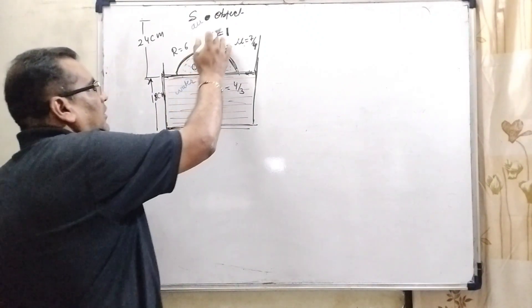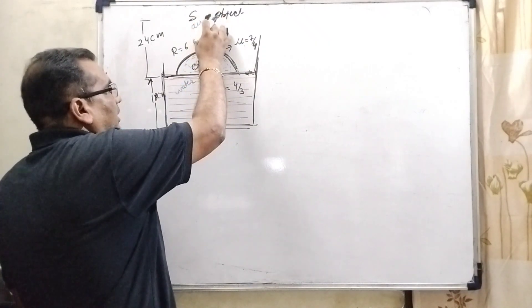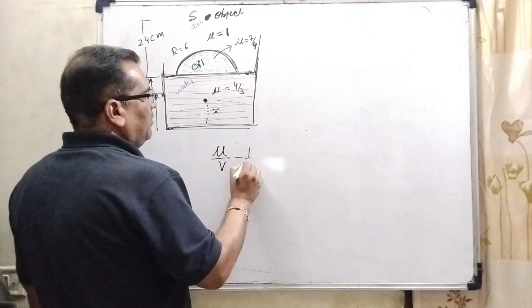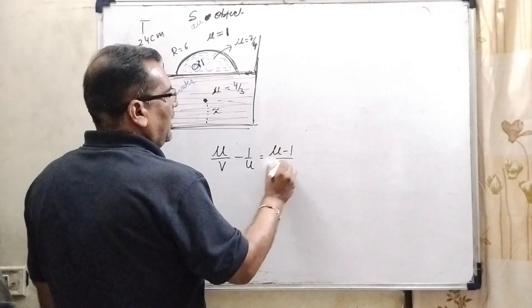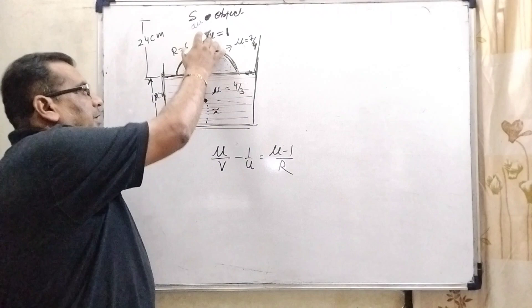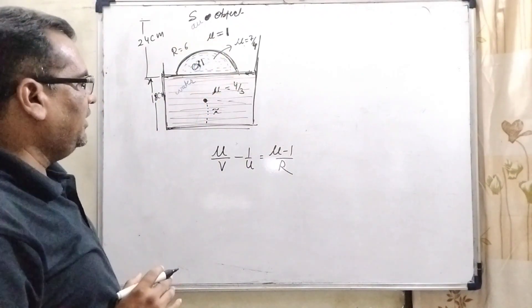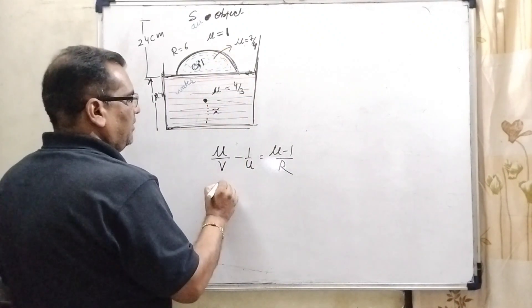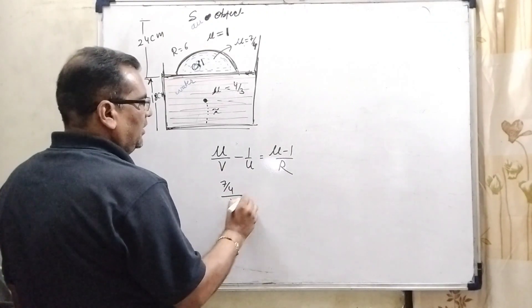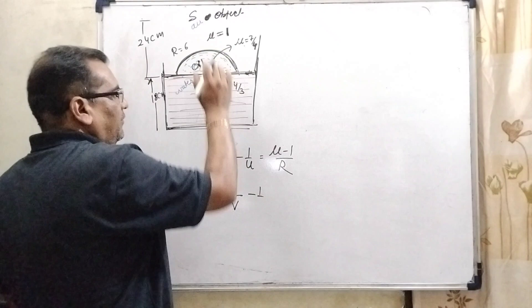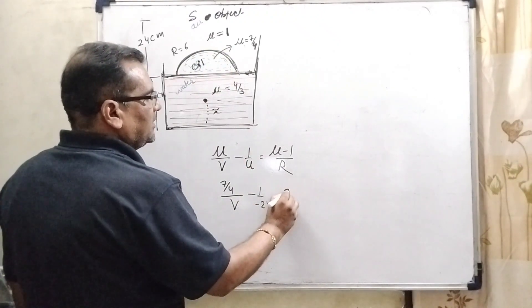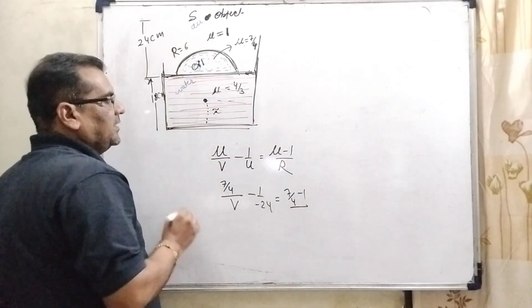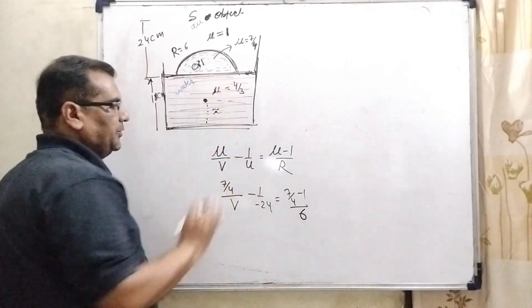First of all, this object, rare medium to denser medium, we are using mu by V minus 1 by U equal to mu minus 1 by R. From rare medium to denser medium by using proper sign convention rules. Here, what is mu is given for the denser medium? That is 7 by 4. Here, we have to find out the V. What is U is given? That is minus 24. 7 by 4 minus 1 and R is given, radius of curvature of the surface is given 6. So here 6 that is positive.